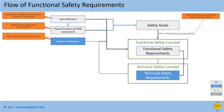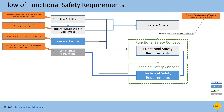Then, technical safety requirements. To prepare these, we need to consider functional requirements as a primary input. Then, the safety manual or assumptions of use, which will be considered for third-party hardware and software elements that are safety-compliant in our system. This contains the requirements that need to be taken care of by the user or integrator of the system.